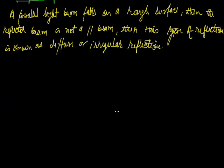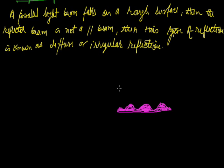This surface is a rough surface. The incident beam, after reflection, moves in different directions. This type of reflection is known as diffuse or irregular reflection.